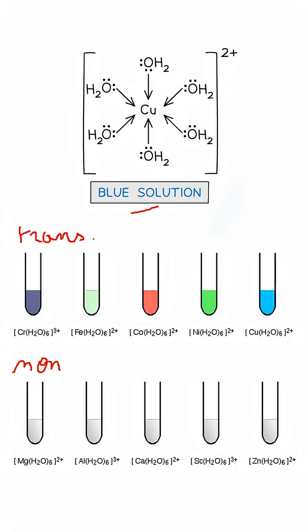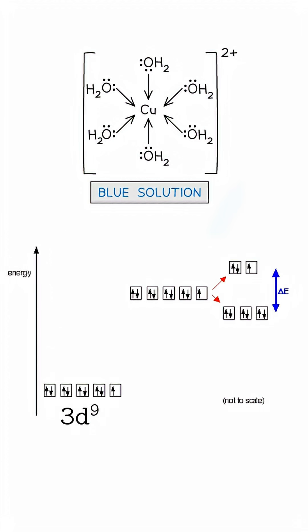So the origin of the color comes from this partially filled D orbital. When water molecules bond to the copper ion, it raises the energy level of the D orbitals due to repulsion between electrons. Because orbitals are not arranged the same way in space, it even induces a splitting.